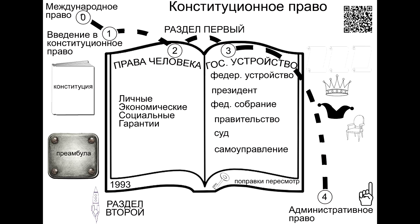Let us look at the second aspect: constitutional rights, freedoms and duties of a person. Constitutional rights, freedoms and duties are the basis of the legal status of a person and a citizen. They are regulated by chapter 2 of the constitution of the Russian Federation. A person's subjective constitutional rights are defined as the measure of their possible behavior. Freedom is the subjective ability of a person to perform or not to perform specific actions based on their rights. Human rights and freedoms are recognized by the constitution of the Russian Federation as the highest value, determining the meaning, content and application of laws, the activities of the legislative and executive authorities, local self-government, and are provided with justice.